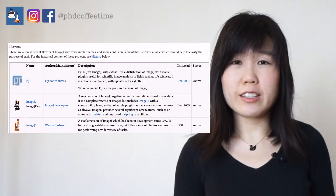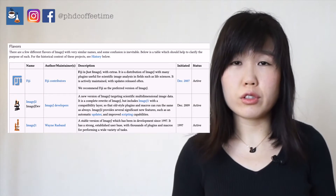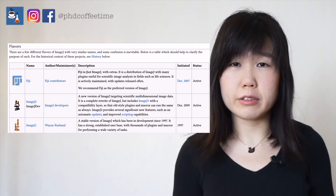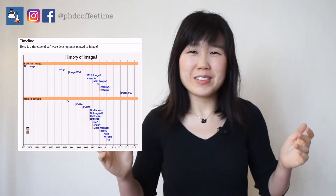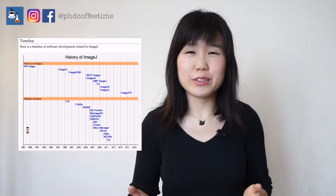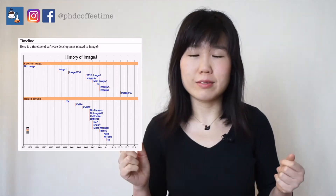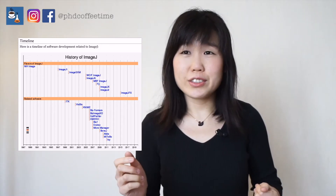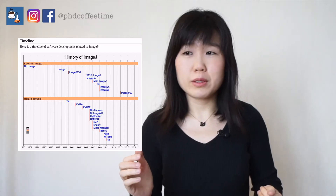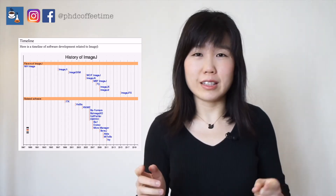As its name suggests, ImageJ is written in a Java-based language. Disclosure: I was born in the same year as the precursor of ImageJ — 1987. Ten years later, ImageJ was born in 1997. When I first used ImageJ, I had my first opportunity to work on a research project.